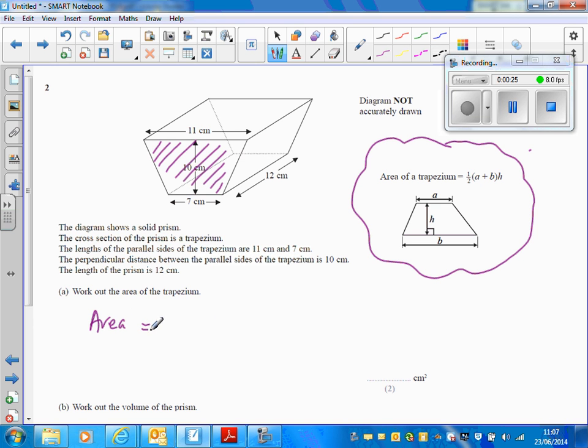So the area of the trapezium - in this case the parallel sides are the 11, and we're going to add the 7 to that. I prefer to do it like this, so I'm going to divide those by 2, and then I multiply by the perpendicular distance between them, which is 10.